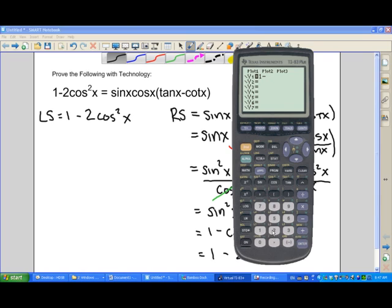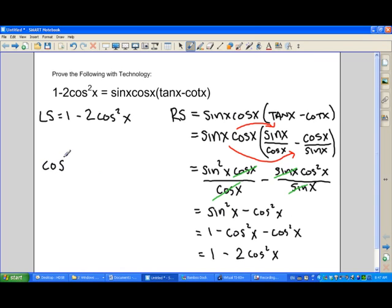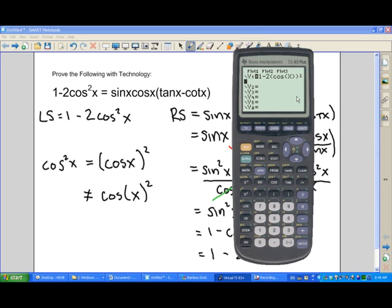So I want to make sure when I put this on the graphing calculator I do it correctly. So my first function, or my left-hand side, was one minus two times the cosine of x squared. Notice how I put that function in the graphing calculator. The convention for writing cosine of x squared is cos squared x, which means the same thing as cosine of x all squared. But it's not the same thing as the cosine of x squared. So make sure we're using brackets properly when we're putting this in.